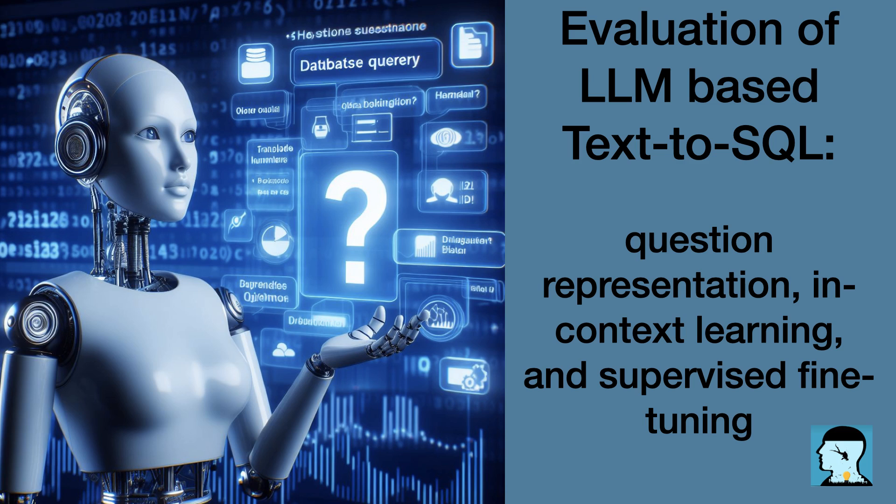How did the study's emphasis on token efficiency contribute to achieving a new high accuracy of 86.6% on the spider leaderboard for text-to-SQL tasks using large language models? The study emphasized token efficiency by focusing on using fewer words to give instructions to the large language models. It's like giving clear and simple directions to a robot to perform a task, making sure not to confuse it with too many unnecessary steps. This helped in achieving a new high accuracy of 86.6% on the spider leaderboard for text-to-SQL tasks, because the models could understand and execute the instructions more accurately and efficiently, like having a clear map to follow without any extra distractions.